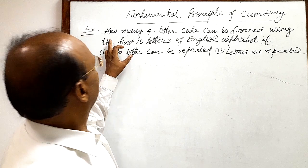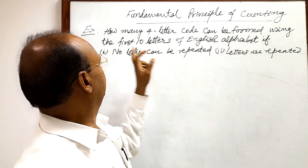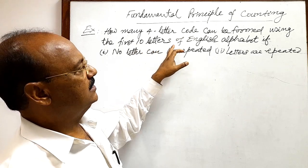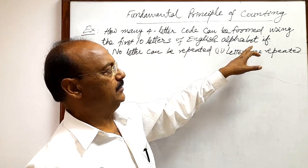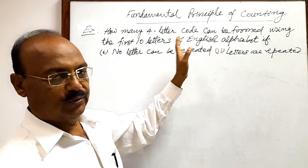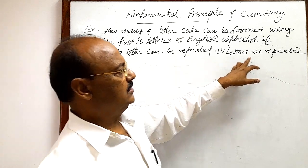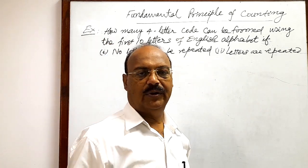Here question is, how many four letter code can be formed using the first 10 letters of English alphabet. There are two parts of this question, there are two conditions: one is no letter can be repeated and second is letters are repeated.